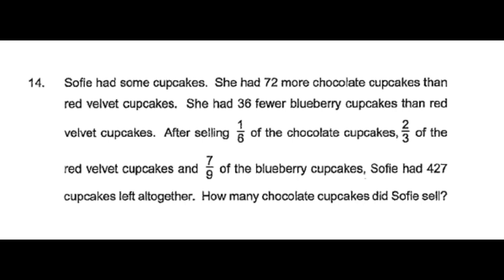Sophie had some cupcakes. She had 72 more chocolate cupcakes than red velvet cakes. She had 36 fewer blueberry cakes than red velvet cakes. After selling one sixth of the chocolate cupcakes, two thirds of the red velvet cupcakes, and seven ninths of the blueberry cupcakes, Sophie had 427 cupcakes left altogether. How many chocolate cupcakes did Sophie sell?